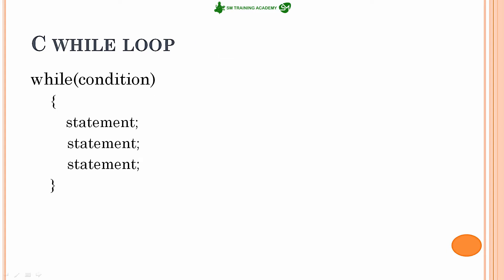The first loop is the while loop, which is also called an entry control loop. Looking at the syntax, it has a condition — while(condition) — and inside the curly braces we have a block of code which needs to be executed. The program checks this condition at the entry point of the loop, and if the condition is true, it executes the block of code.